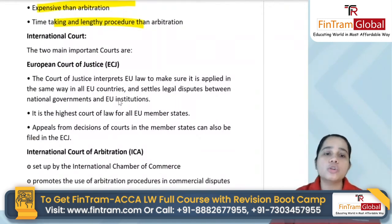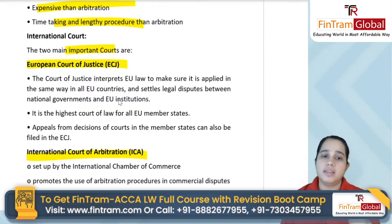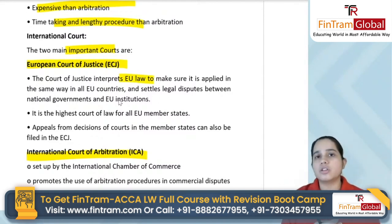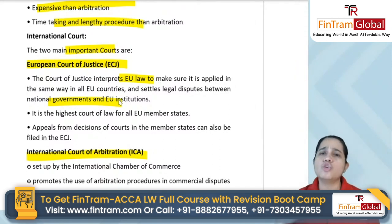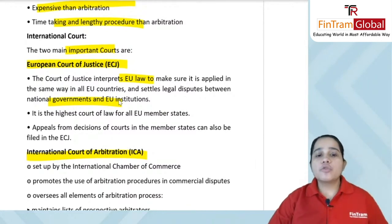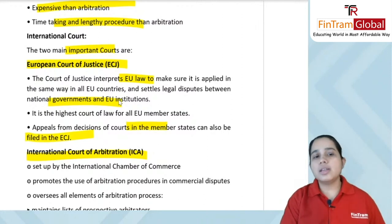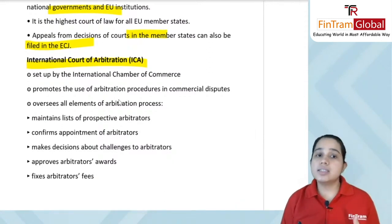There are two main important international courts. The European Court of Justice (ECJ) interprets EU law to ensure it is applied the same way in all EU countries. It settles legal disputes between national governments and EU institutions. It is the highest court of law for all EU member states. Appeals from decisions of courts in member states can also be filed in the ECJ.